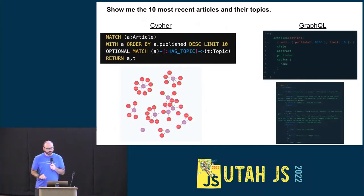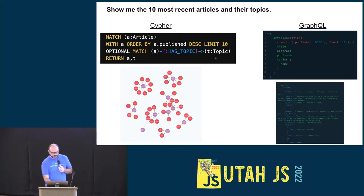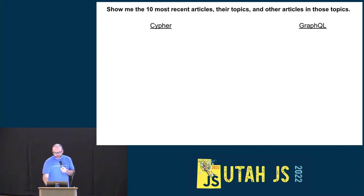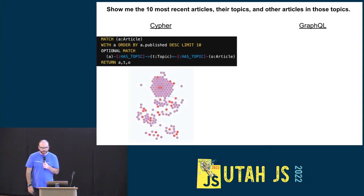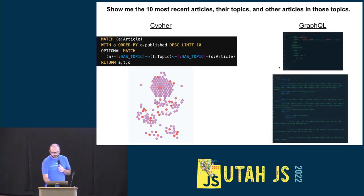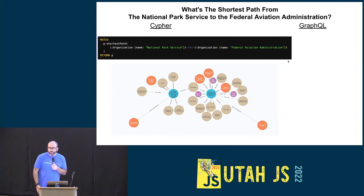Now a more complex traversal — for those 10 most recent articles, also give me their topics. In Cypher, I extend the graph pattern to draw a relationship out to topic nodes. In GraphQL, I add to my nested selection set: add topics, and for each topic give me the name. Both are describing similar ideas of traversing through the data graph. We can keep going with arbitrarily complex patterns — show me other articles in those same topics.